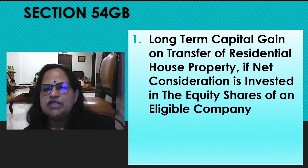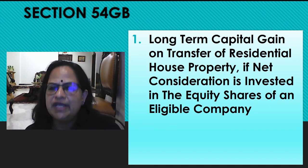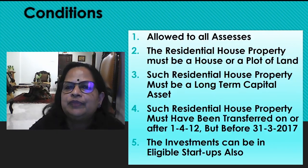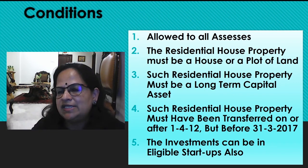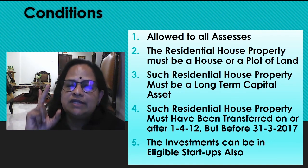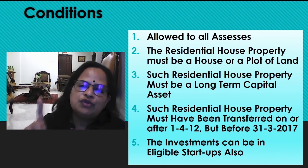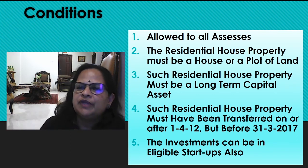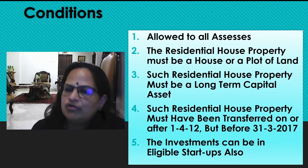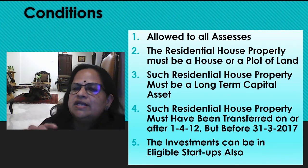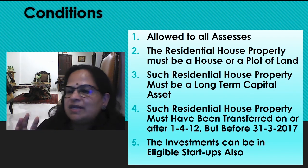Last section 54GB: long-term capital gain on transfer of residential house property if net consideration is invested in the equity shares of an eligible company. This is a new section 54GB. Conditions: allowed to all SSCs — that means HUF, individual, company, partnership firm, association of persons, everybody can claim. To remember: in sections 54 and 54B, only individuals and HUF can claim. Almost all other sections allow all SSCs to claim the exemption.